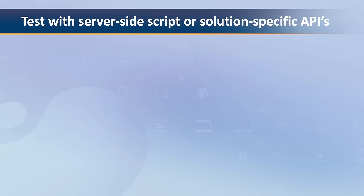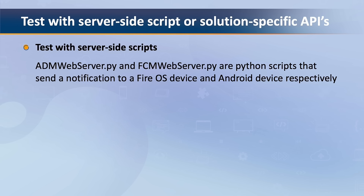The other two ways you can test are by either using server-side scripts or solution-specific APIs. The following server-side scripts allow you to send notifications to a device. ADM Web Server is a Python script that sends a notification to a Fire OS device, whereas FCM Web Server is a Python script that sends a notification to an Android device. To send a test notification, copy the code, paste it into an editor, and update the values in the comments. Then save each as a .py file and run the scripts.